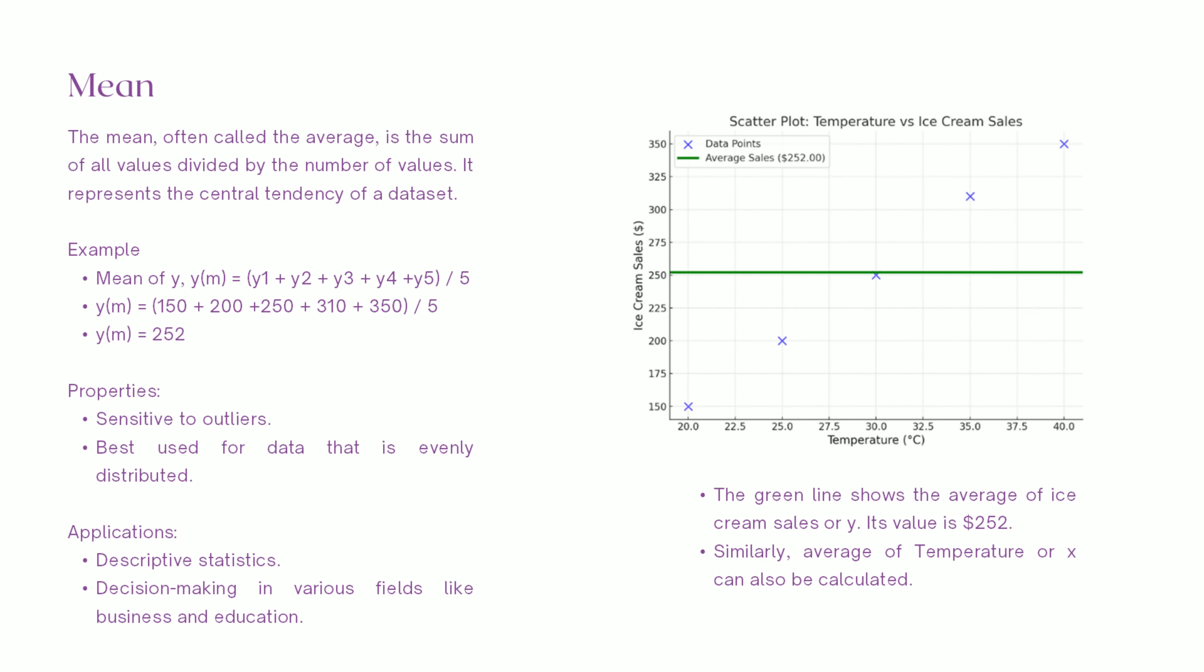outliers - do they represent errors, or are they genuine? And distribution - if the data is skewed, the mean might not tell the full story. Applications of the mean include businesses calculating average revenue, schools analyzing average test scores, and scientists measuring average growth rates.